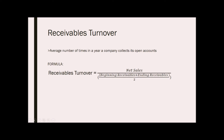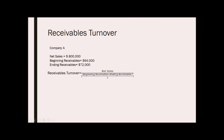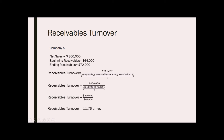For example, Company A has net sales of $800,000, beginning receivables of $64,000, and ending receivables of $72,000. We divide $800,000 over the average of the beginning and ending receivables — that is $800,000 over $68,000 — giving a receivables turnover of 11.76 times. This means that the company's receivables are being collected 11.76 times. The higher the accounts receivable turnover ratio, the better the company is doing at collecting its accounts receivables.